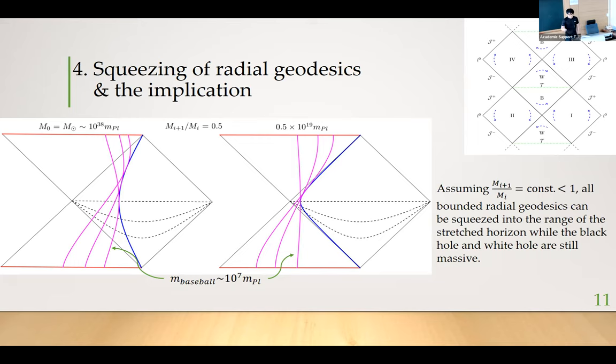We can also show that this always happens very early before the system, the black hole and white hole mass is still very massive. This means that around the region of the event horizon, everything should be classical. For example, we can use the solar mass at one stage and until that all of the boundaries state are squeezed inside a stretch horizon, the system still has this mass. So it's still pretty heavy. This is a very weird phenomenon.